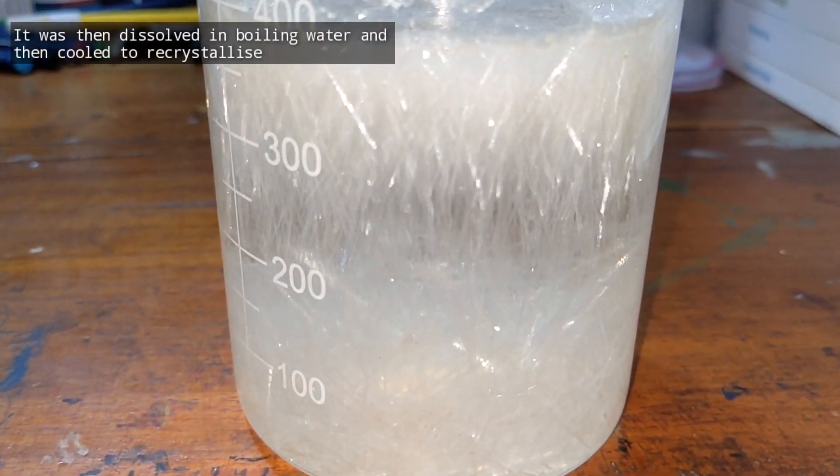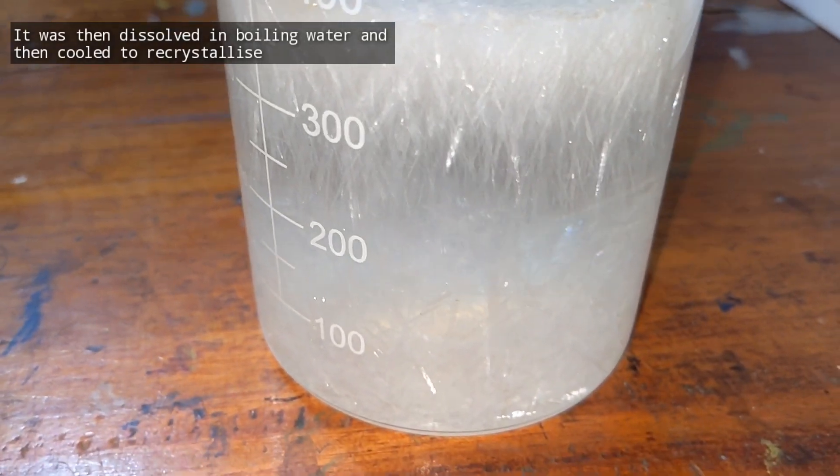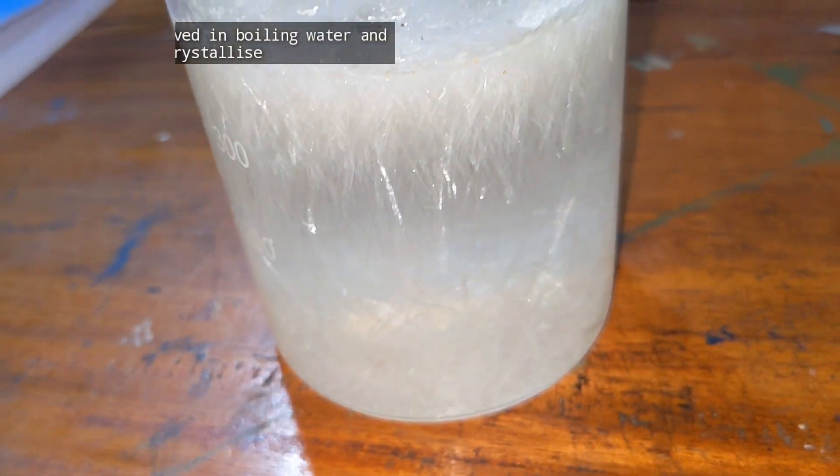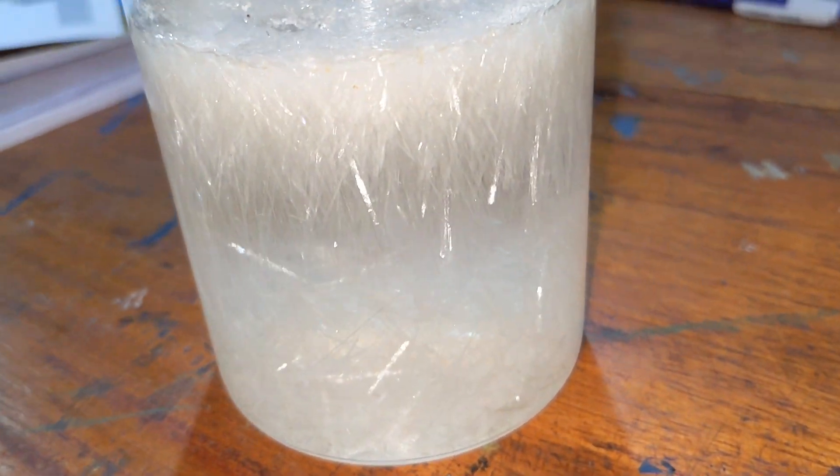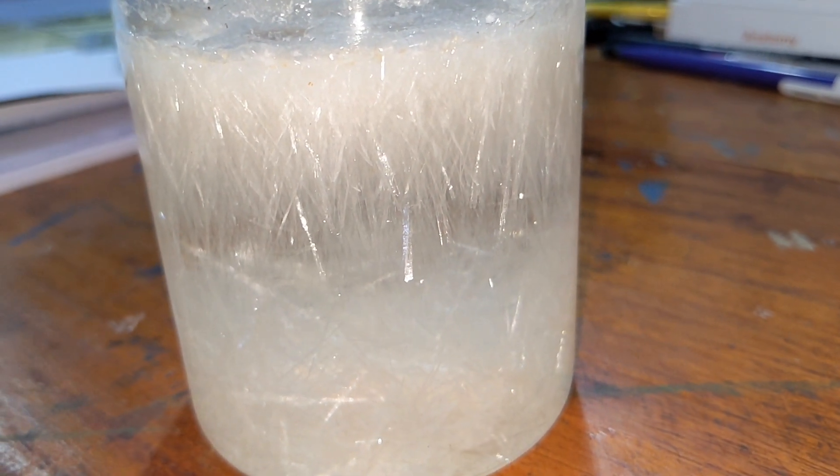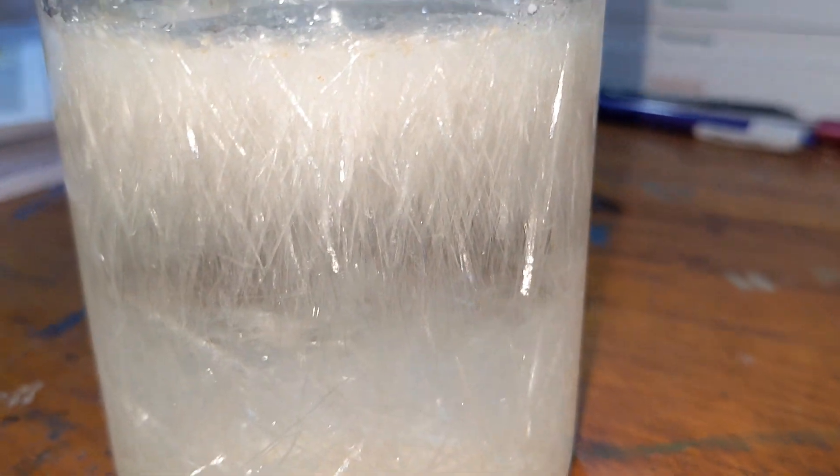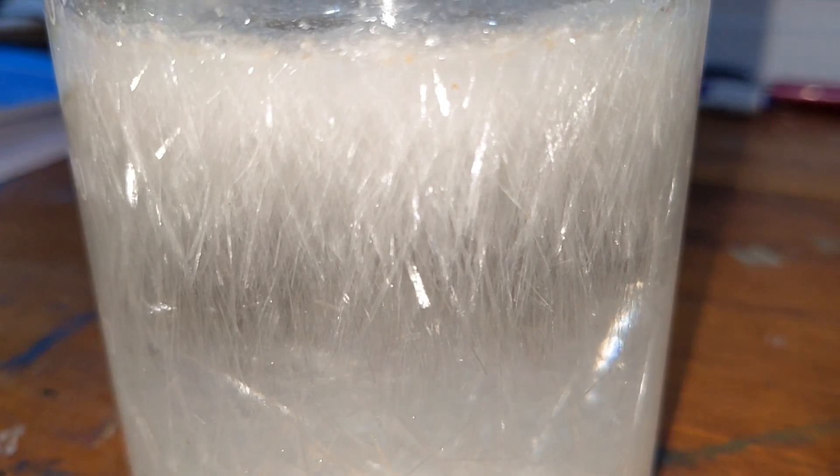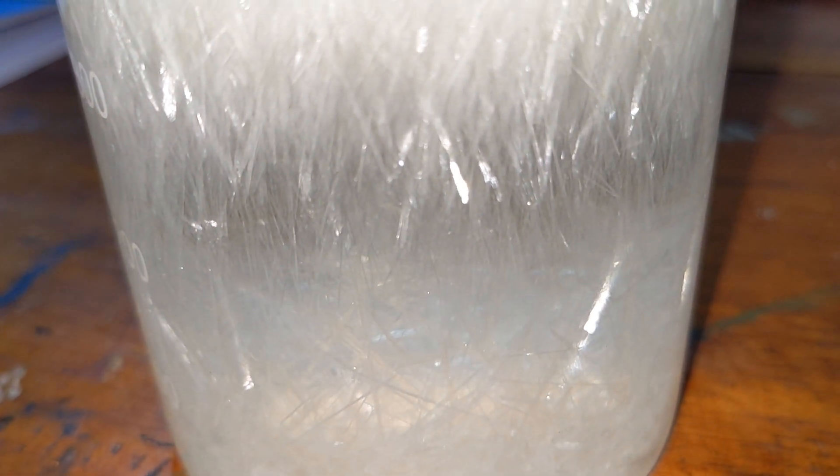These are the beautiful needle-shaped crystals of pure benzoic acid obtained by recrystallizing using hot water bath. I obtained around 15 grams of benzoic acid which represent about 88% yield.